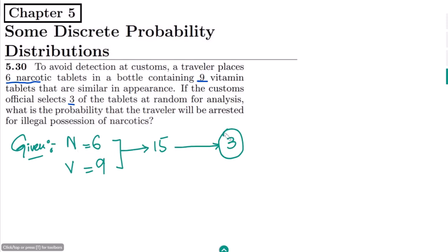If any one is X is greater than or equal to 1, the person will be arrested because those would be the narcotics. Those tablets can be 1, 2, or 3. If any one of them is narcotic, he will be arrested.